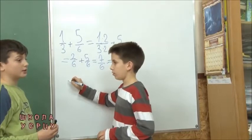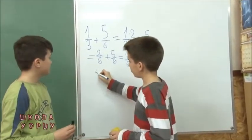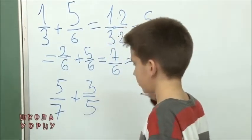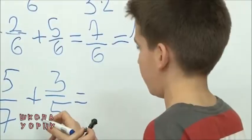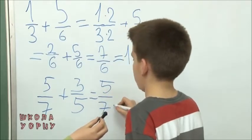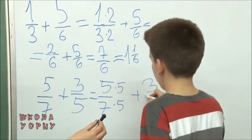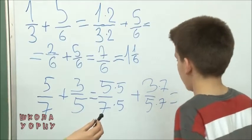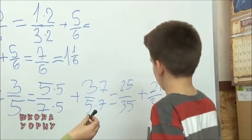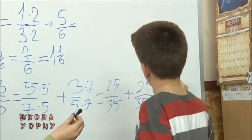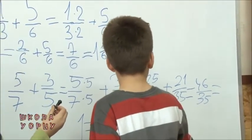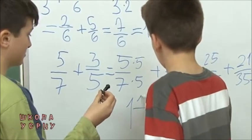Sad će nam Nikola uraditi zadatak gde su imenilaci uzajamno prosti brojevi. Pet sedmina plus tri petine. Jednako je — kada su nam oba broja uzajamno prosti, mi pomnožimo: sedam puta pet je 35. Pa pišemo pet sedmina puta pet plus tri petine puta sedam. Što je jednako dvadeset pet trideset petina plus dvadeset jedna trideset petina, što je jednako četrdeset šest trideset petina, što se može pretvoriti u mešoviti broj: jedan i jedanaest trideset petina.